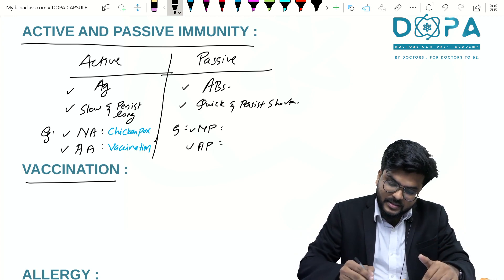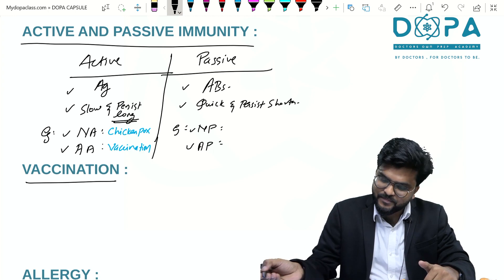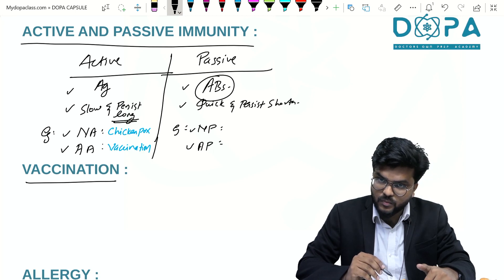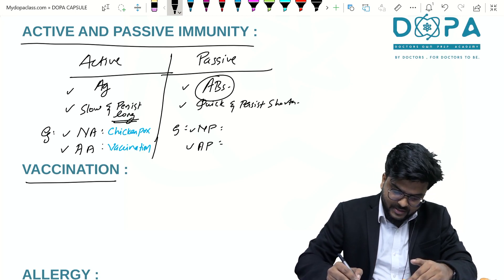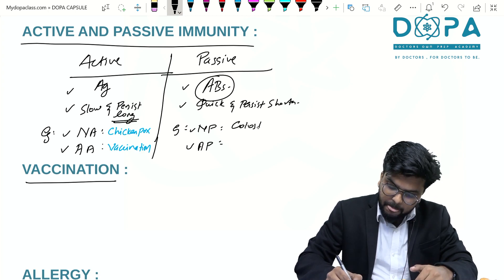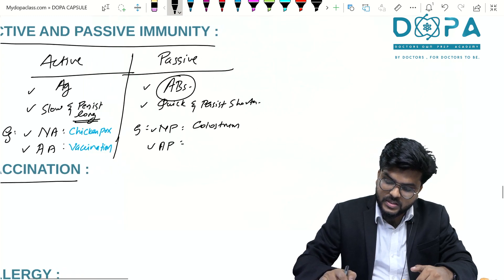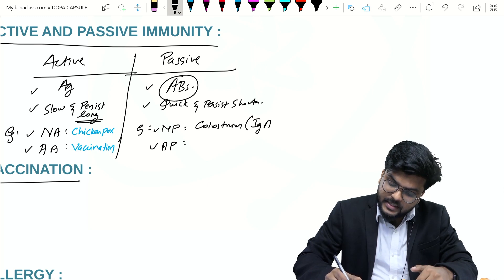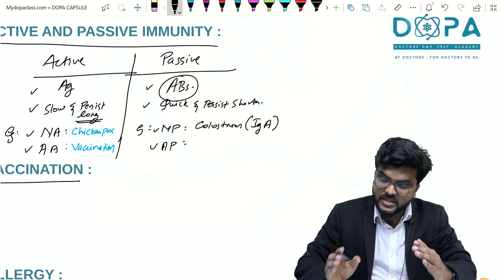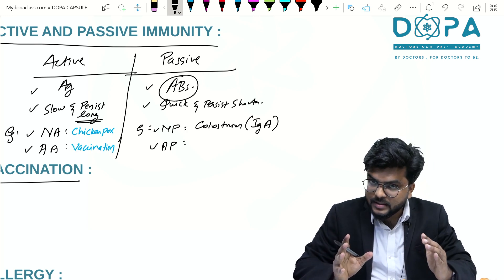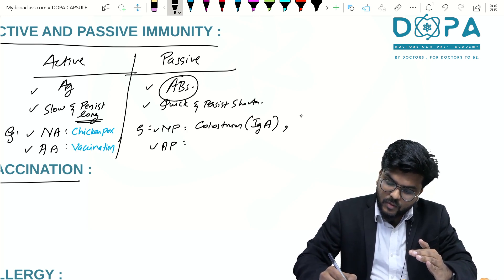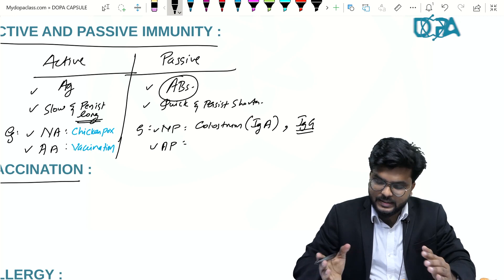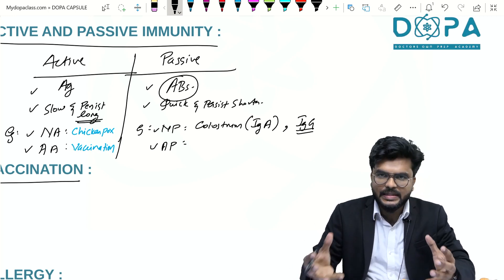Regarding passive immunity, antibodies are what is working here. An example of natural passive immunity is colostrum — the first milk delivered to a baby. Colostrum contains IgA (Immunoglobulin A) antibodies. Also, IgG is the only antibody which crosses the placenta, and that is another example of natural passive immunity — the child naturally receives these antibodies.